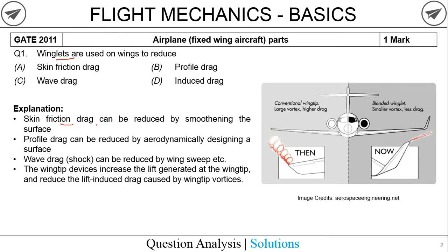The first option is skin friction drag, which is reduced by smoothening the surface - it has nothing to do with the winglet. Profile drag is reduced by aerodynamically designing a surface, such as providing a landing gear cover. Wave drag is associated with supersonic flow and shocks, and is reduced by inducing wing sweep. So those three options can be eliminated.